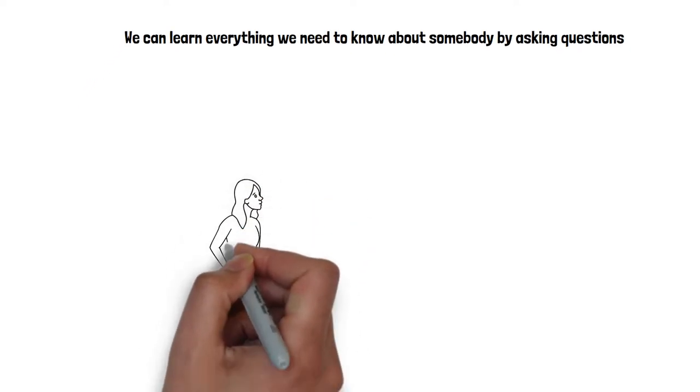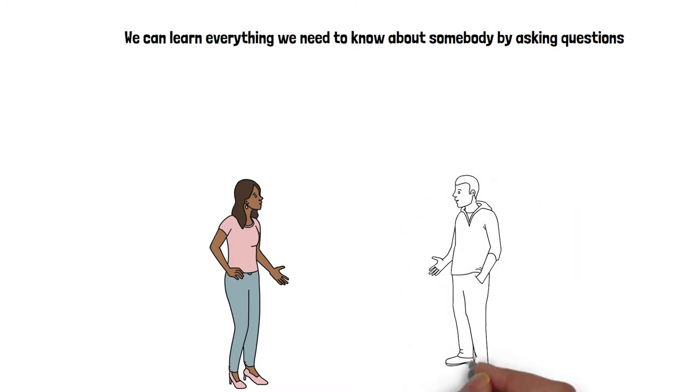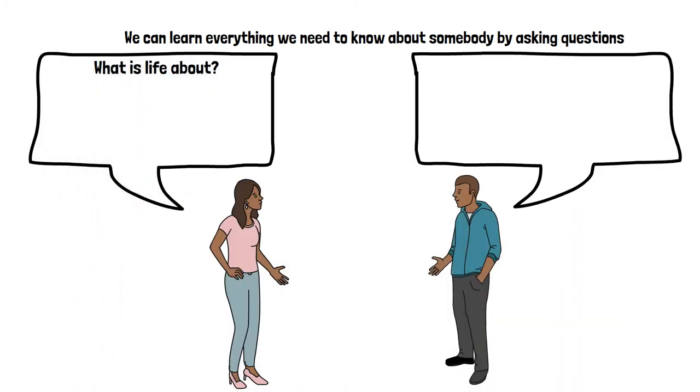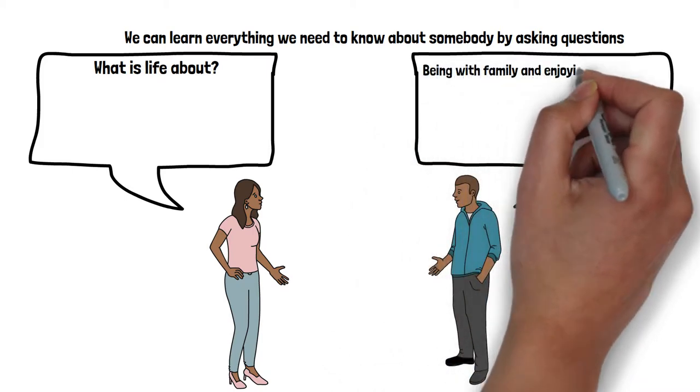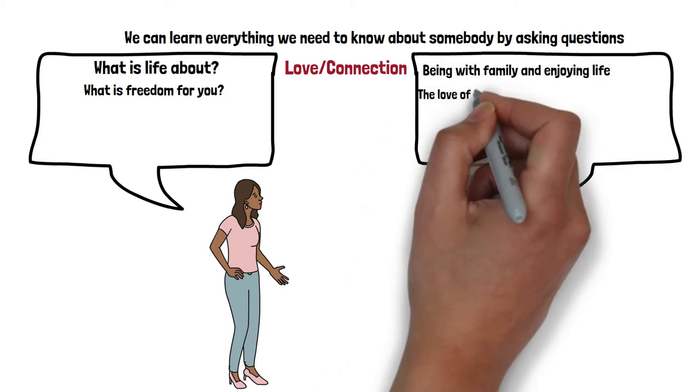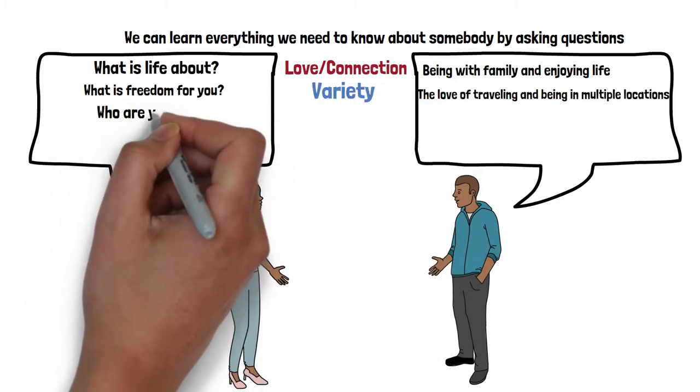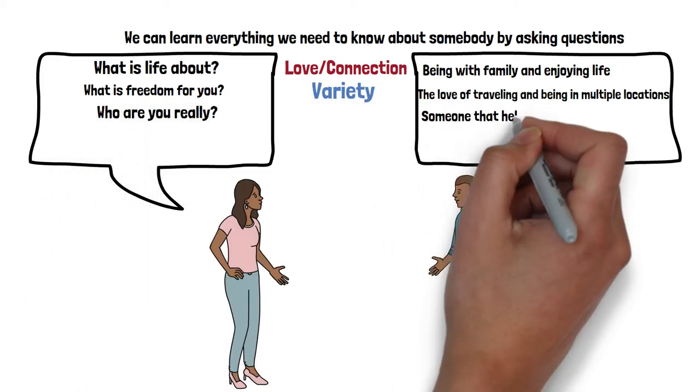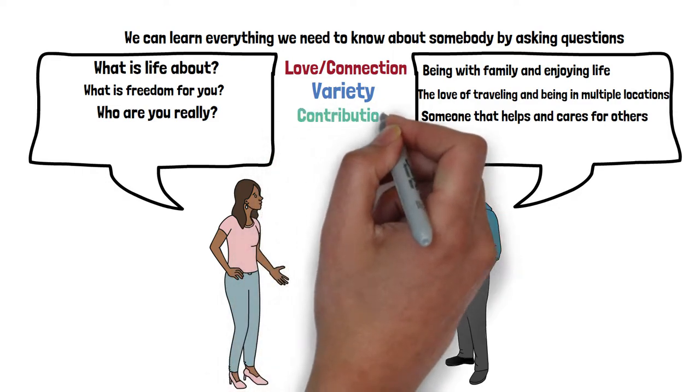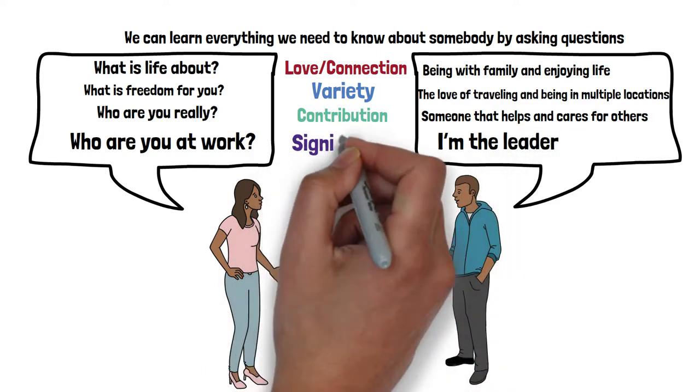For example, ask these questions and think about the answers you get. What needs are being matched? So if you ask somebody, what is life about? And for example, they say, being with family and enjoying life. This means the needs being met is love and connection. What is freedom for you? An example of this is the love of traveling and being in multiple locations. The need being met being variety. Who are you really? Someone that helps and cares for others. The need being met here is contribution. Who are you at work? I'm the leader. The need here, significance.